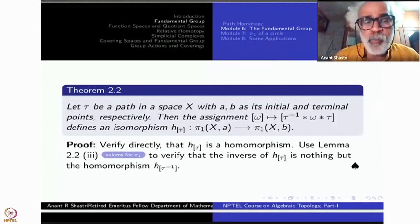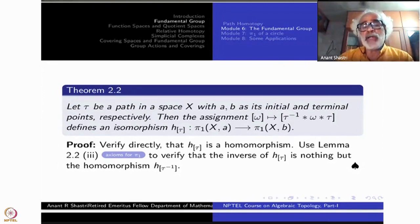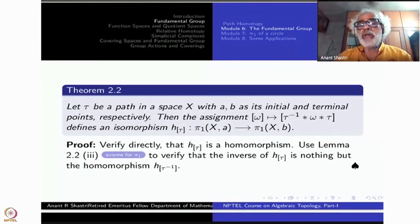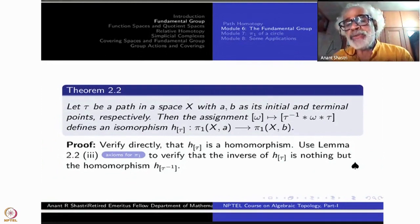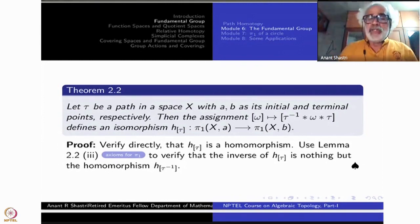Similarly, consider H_{τ⁻¹}, the map with respect to τ⁻¹. Since τ⁻¹ goes from b to a, this gives a map from π₁(X, b) to π₁(X, a). If you take H_τ first and then H_{τ⁻¹}, that is composing with τ ∗ τ⁻¹ on both sides, but τ ∗ τ⁻¹ is homotopic to the constant path, so the composition is the identity map. This means H_τ is an isomorphism.